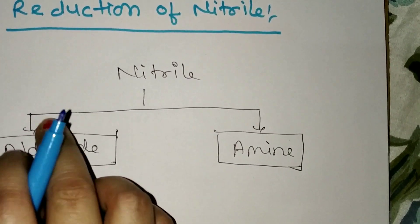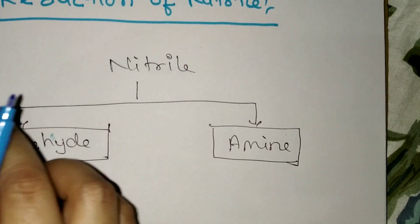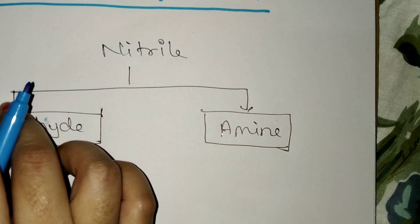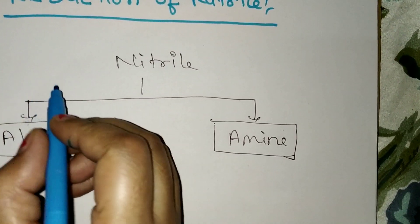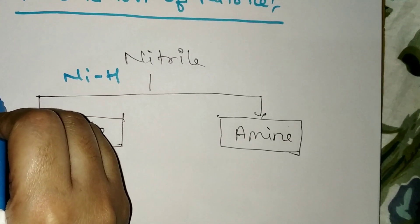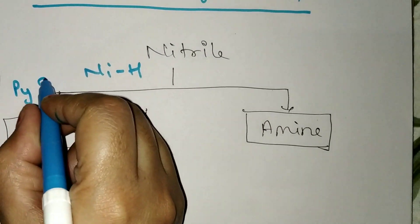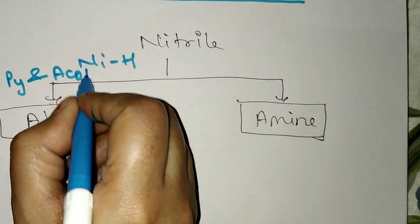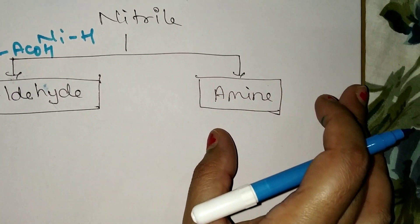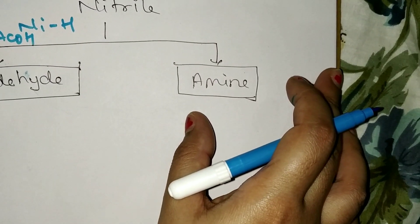Nitriles in aqueous acetic acid pyridine medium are reduced to aldehyde with Raney nickel and sodium hypophosphate. When nitrile is treated with Raney nickel under pressure, primary amines are formed.